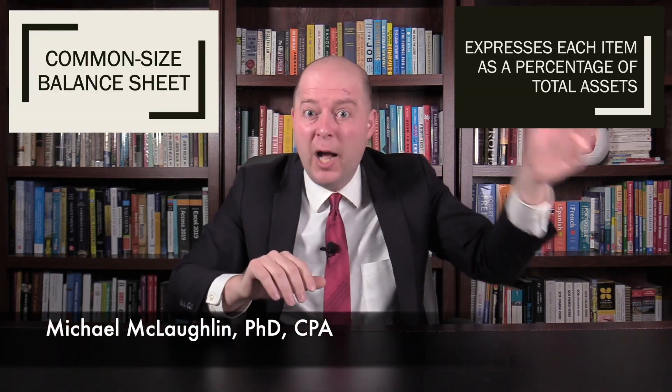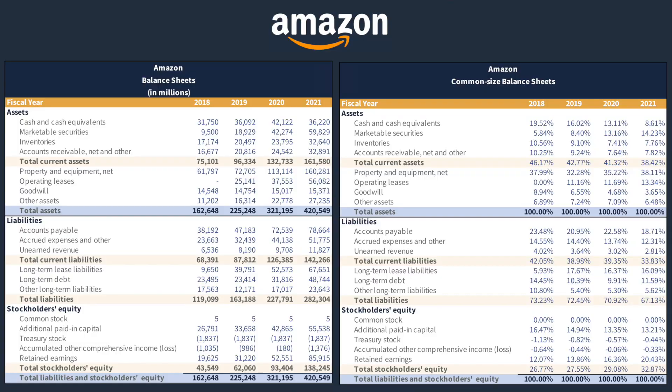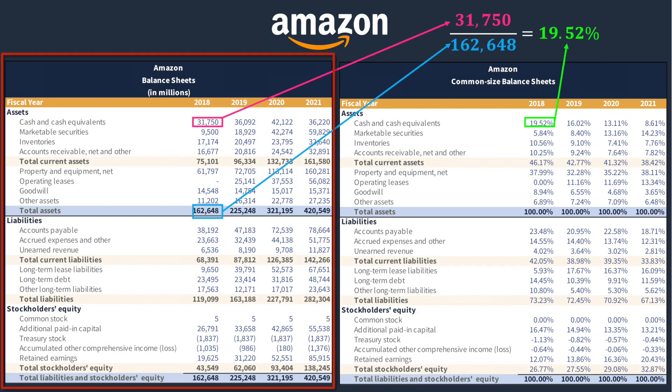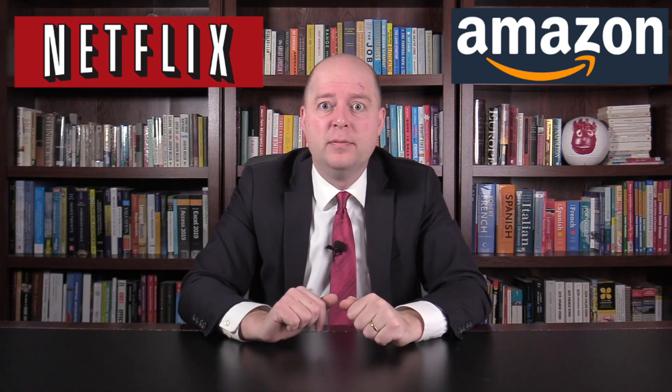A common-sized balance sheet expresses each line item on the balance sheet as a percentage of total assets. To create one, you go line by line through the balance sheet, dividing each line item by total assets. These percentages form the common-sized balance sheet, which is really helpful because it allows us to compare balance sheets across companies.